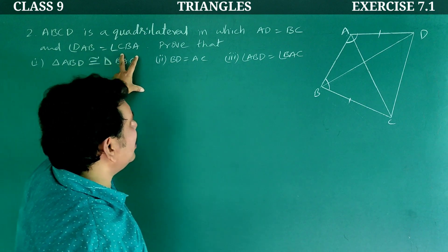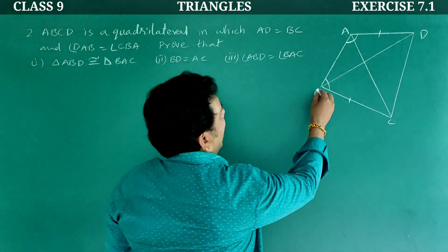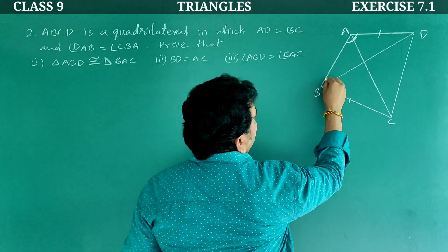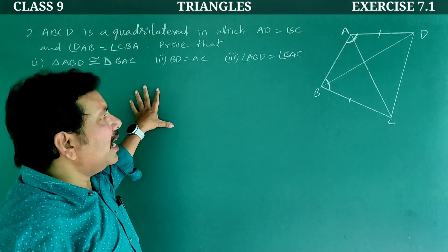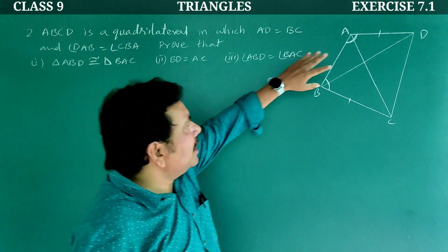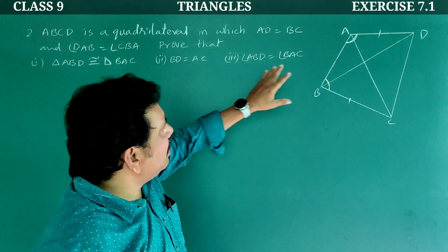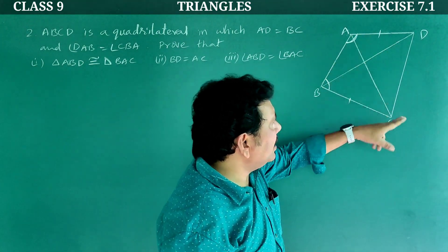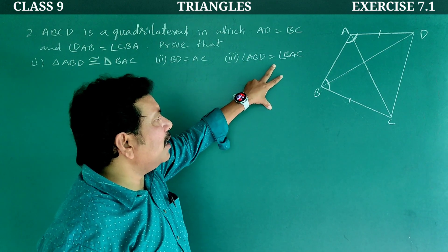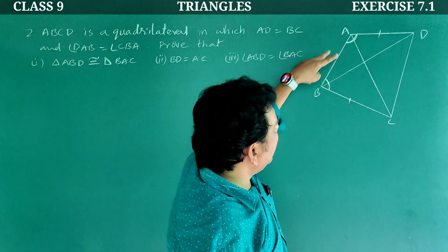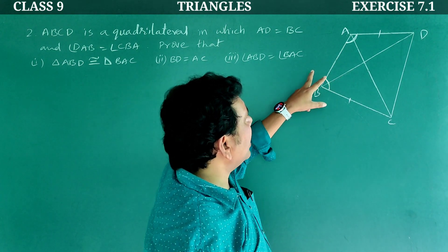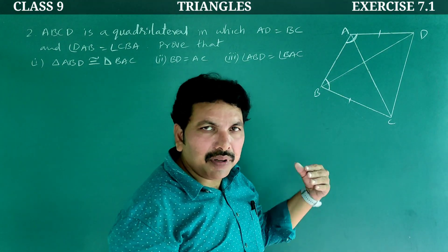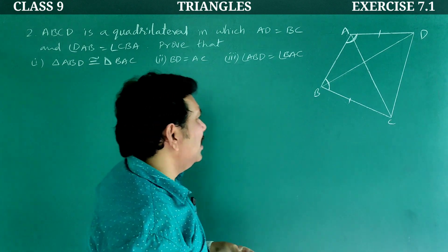Next, angle DAB is equal to angle CBA — this angle and this angle are both equal. What we have to prove: triangle ABD is congruent to triangle BAC; BD is equal to AC; and angle ABD is equal to angle BAC. These are the three things to prove.